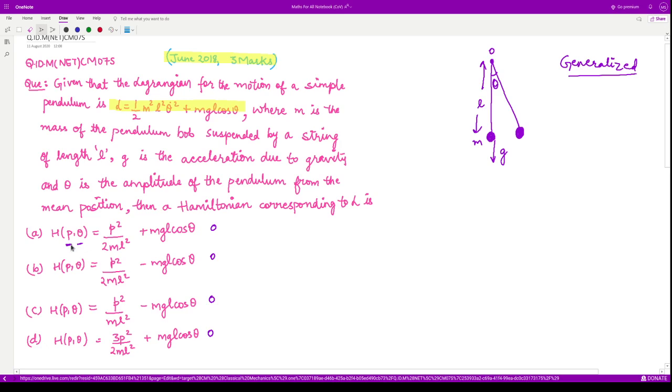The generalized coordinate here could be guessed seeing this p and theta. Obviously, the Hamiltonian is a function of generalized coordinates and generalized momenta. So p here is the generalized momentum, and theta is the generalized coordinate.